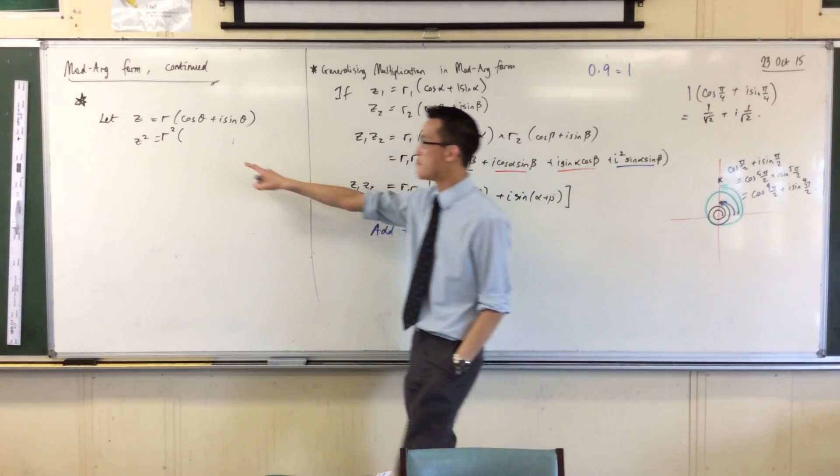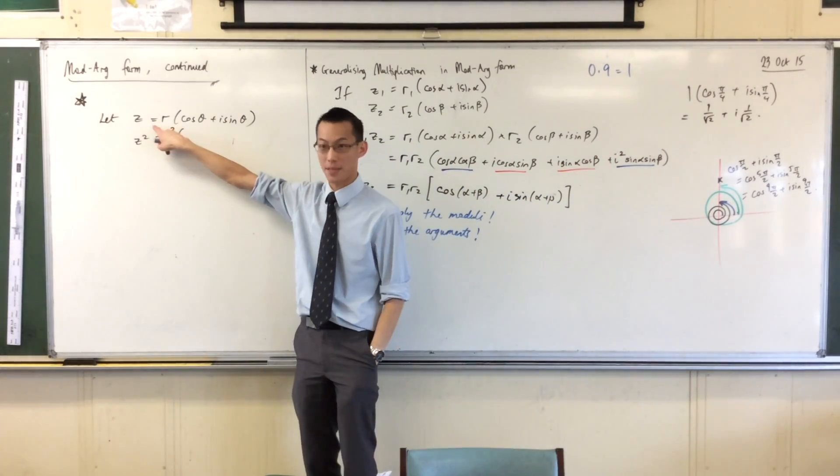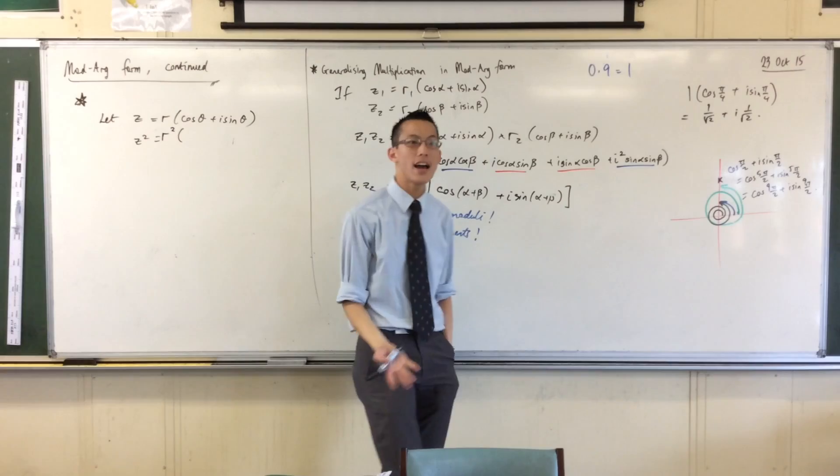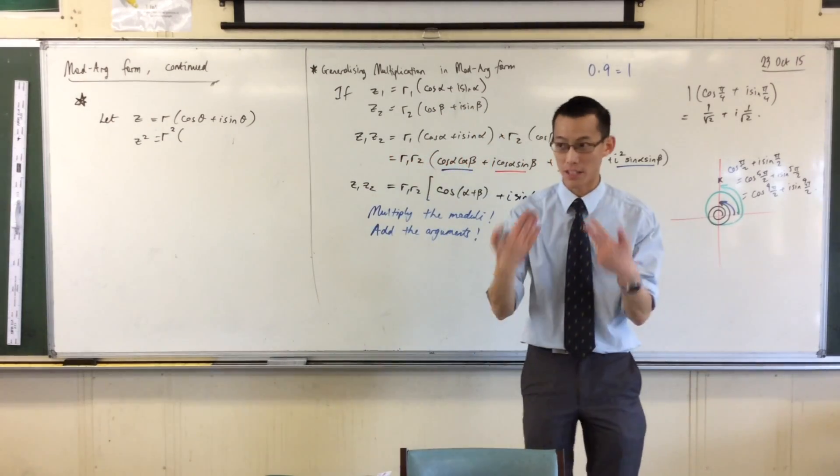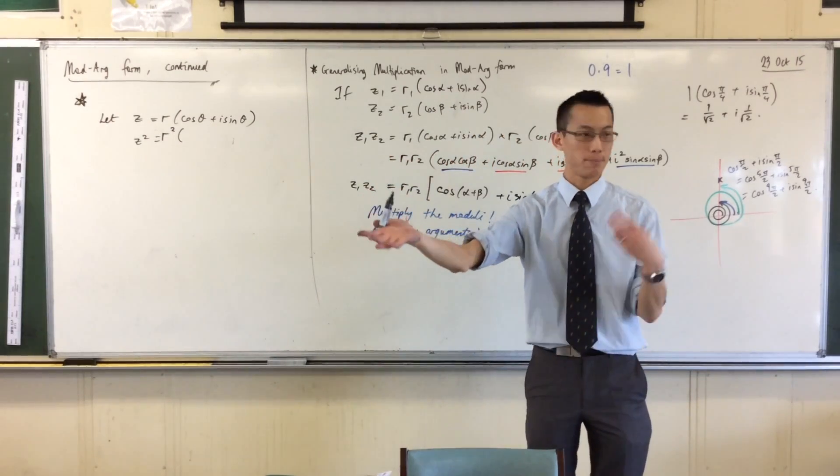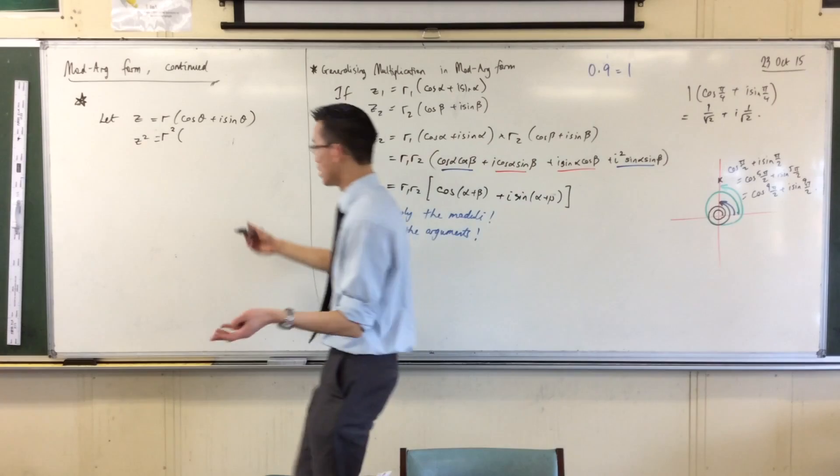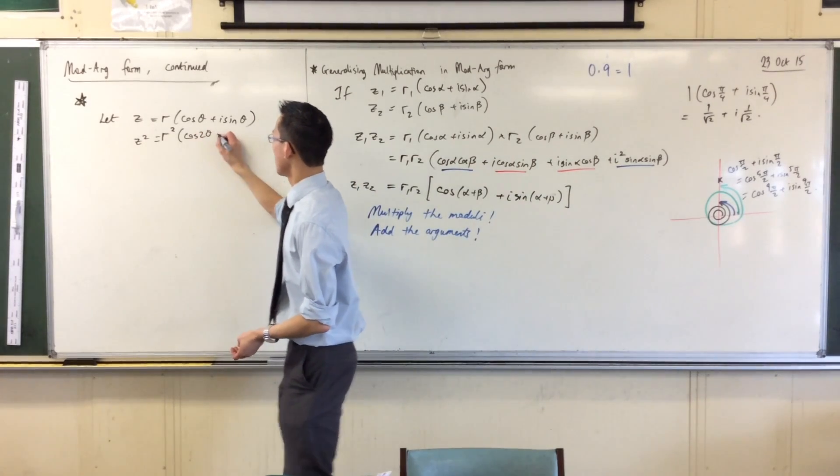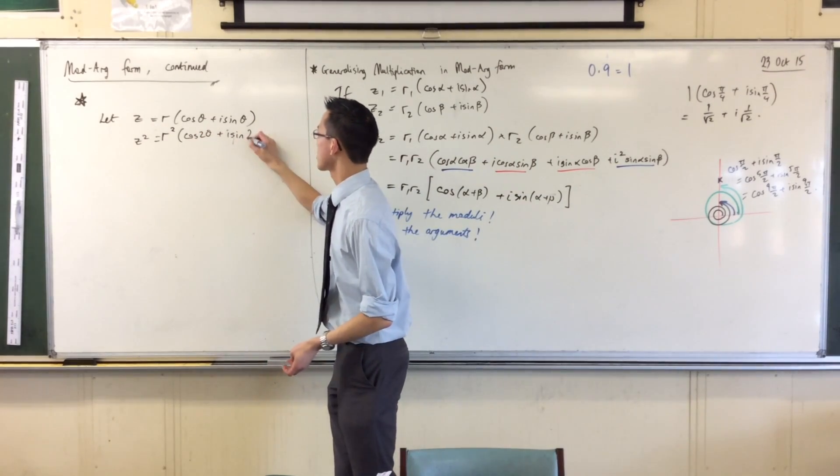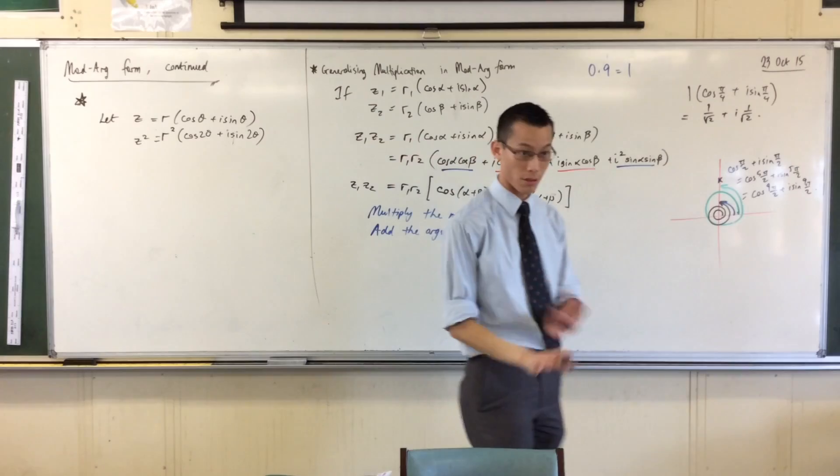Hold on a sec. I've multiplied the moduli, right? R times R. Now I add the arguments. If I'm adding the argument to itself, theta plus theta, it's just going to be cos 2θ plus i sin 2θ. Okay with that?